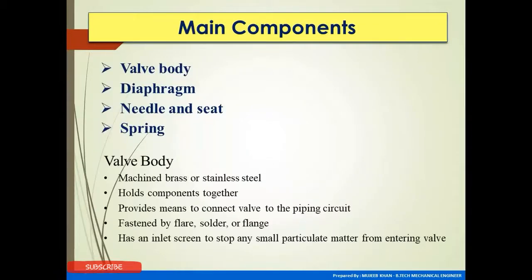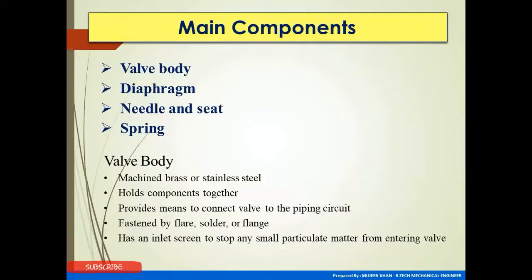The main components are the valve body, the diaphragm, needle and seat, and springs. The valve body is made of brass or stainless steel, holds components together, and provides a means to connect the valve to the piping circuit. It is fastened by flare, solder, or flange, and has an inlet screen to stop any small particulate matter from entering the valve.